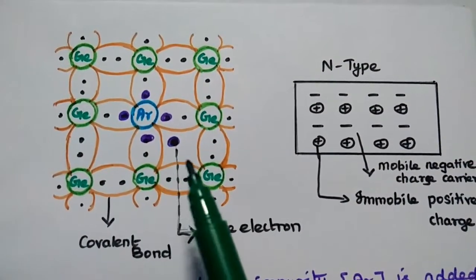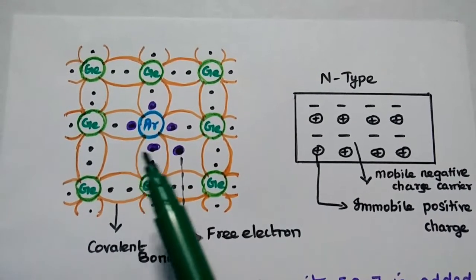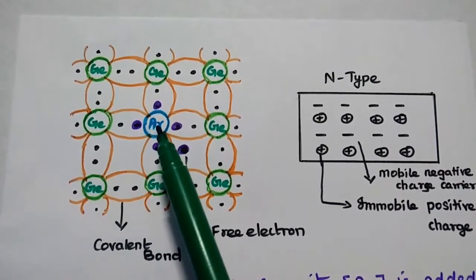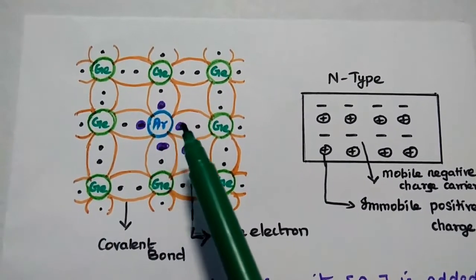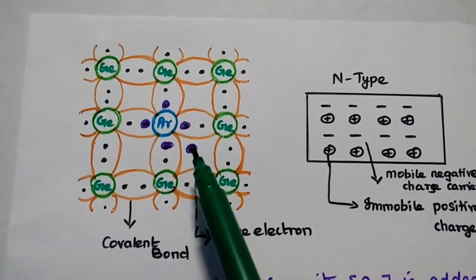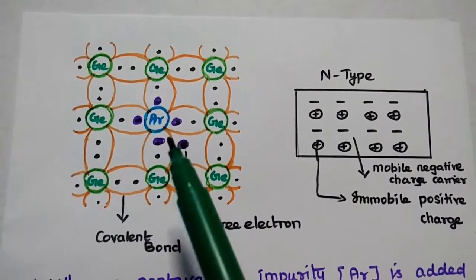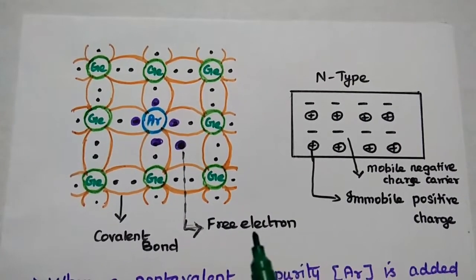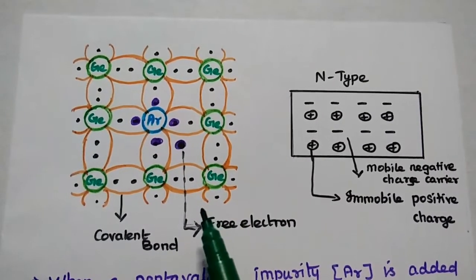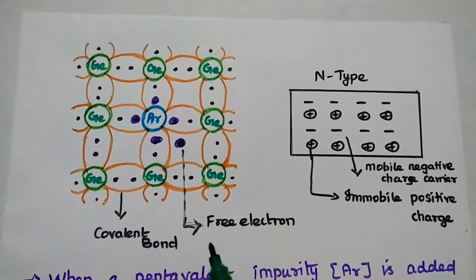This is the structure of the N-type semiconductor material. When a pentavalent impurity such as arsenic is added to germanium semiconductor material, germanium has four valence electrons and arsenic has five valence electrons. Four of the five valence electrons form covalent bonds with other germanium atoms. The fifth electron will be available as a free electron. The pentavalent impurities donate free electrons for current conduction in this semiconductor material.